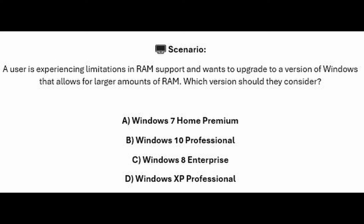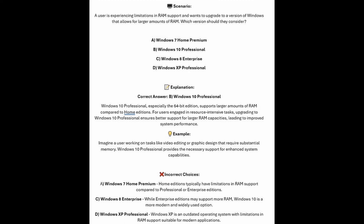Is it A, Windows 7 Home Premium? Is it B, Windows 10 Professional? Is it C, Windows 8 Enterprise? Or is it D, Windows XP Professional? The correct answer is B, Windows 10 Professional.